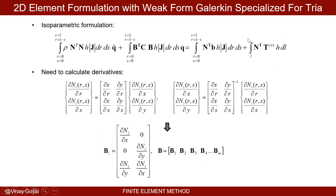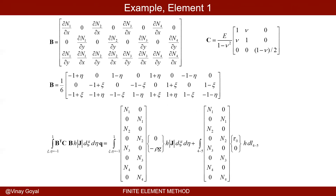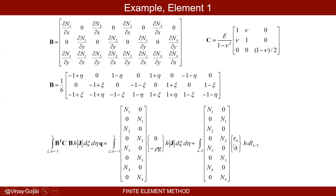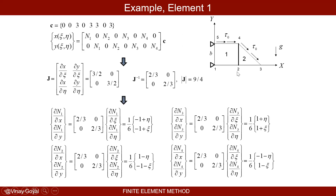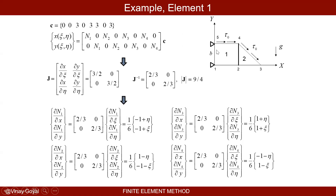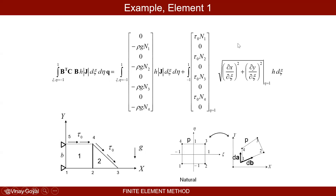Now we deal with the traction forces. For element one, the traction tau-not is applied along the top edge in the x-direction, with zero y-component, because the traction points to the right on that surface. This line integral is only applied along the edge connecting nodes four and five in global numbering.